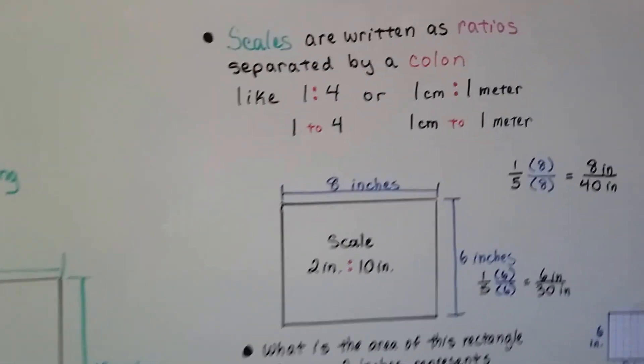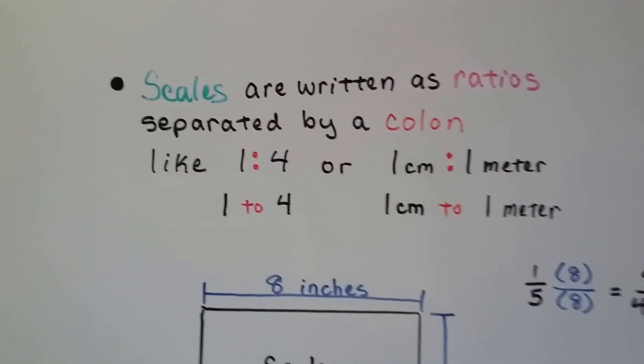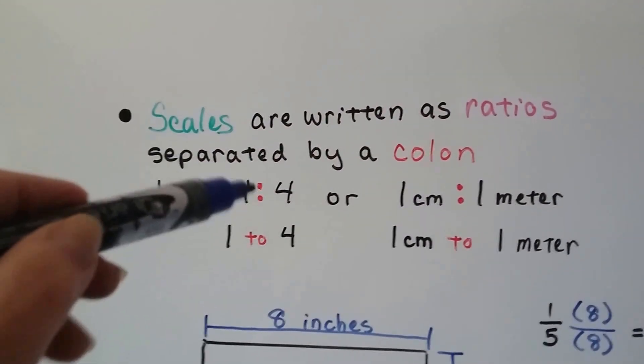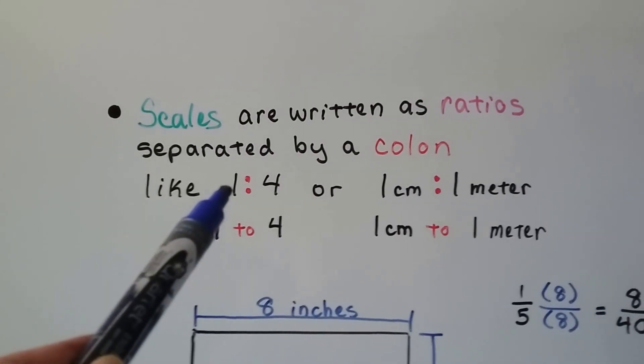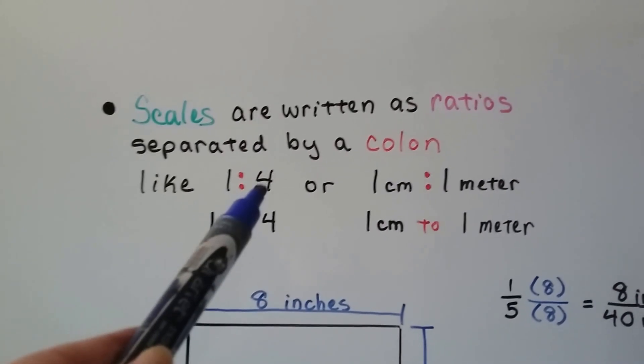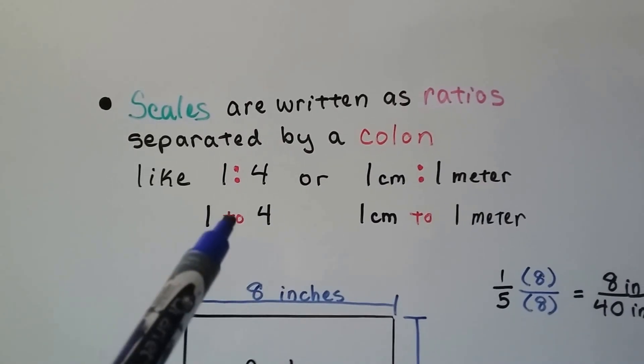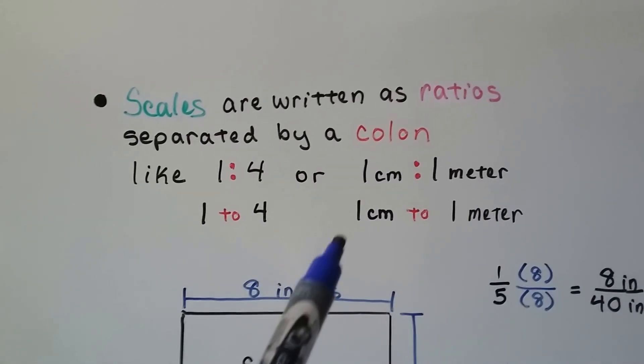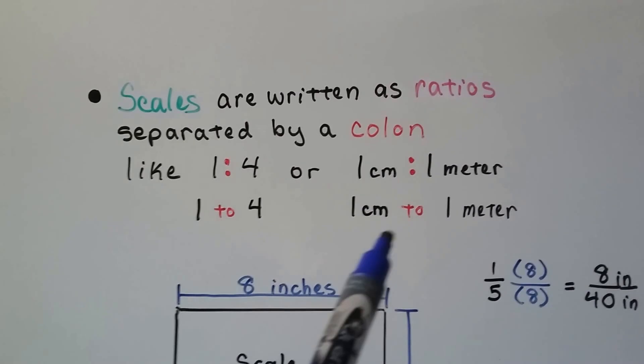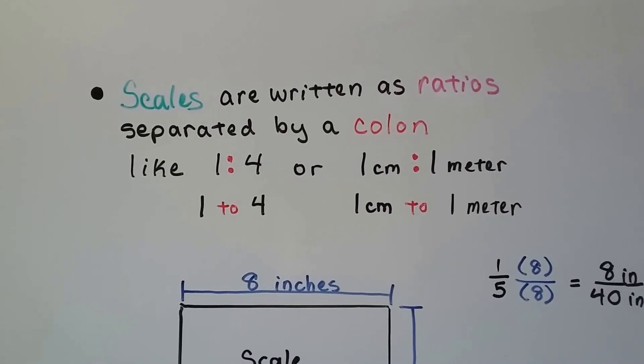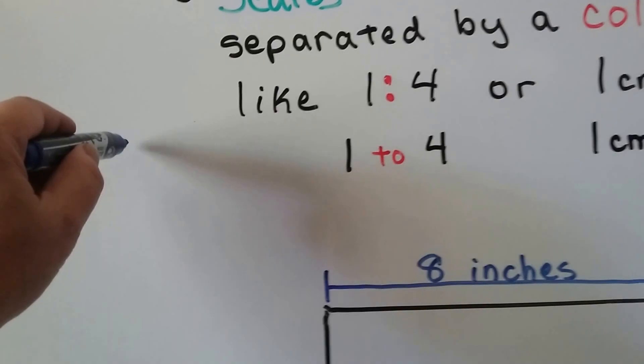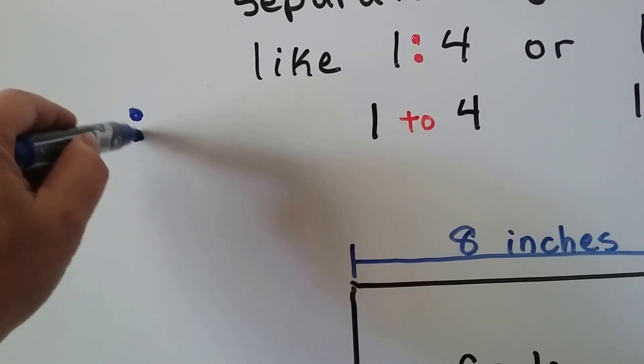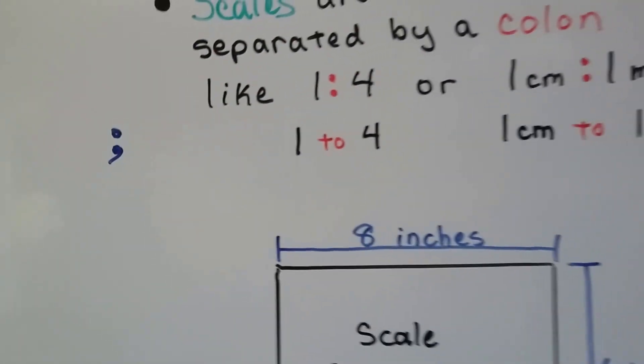So scales are written as ratios separated by a colon. That's what these little two dots are. And it could be written as a 1 with the colon and the 4, and that means 1 to 4. That's the ratio. Or it could be 1 centimeter to 1 meter. So these two little dots are a colon. If you see a dot with a comma, that's a semicolon.